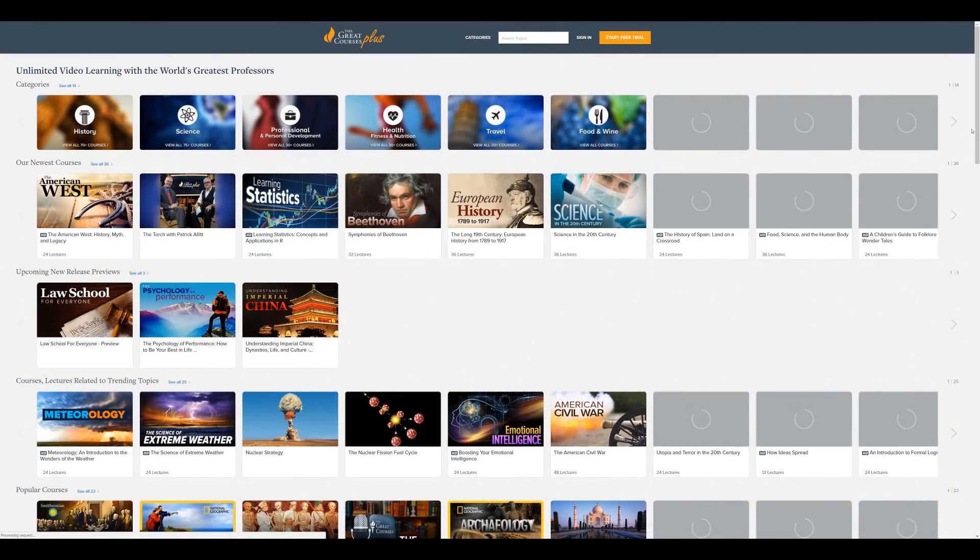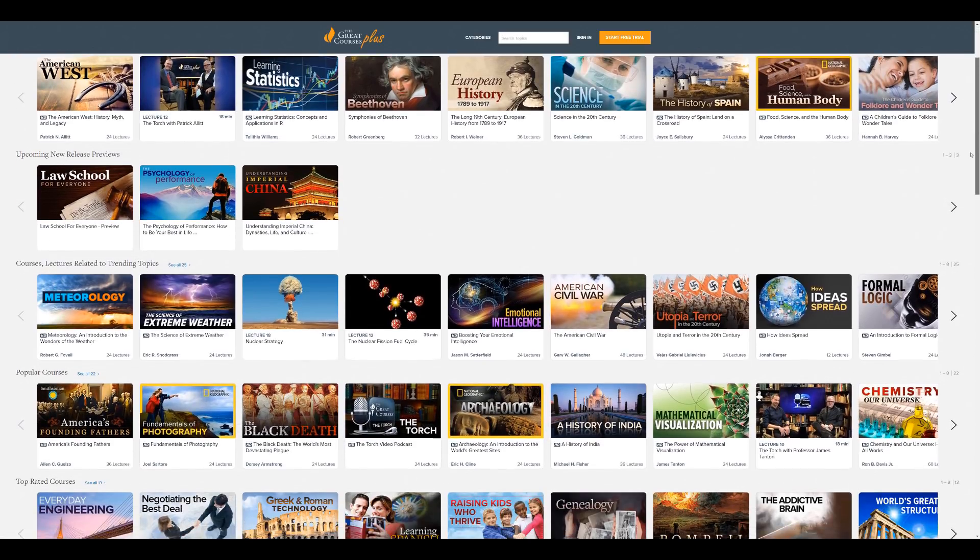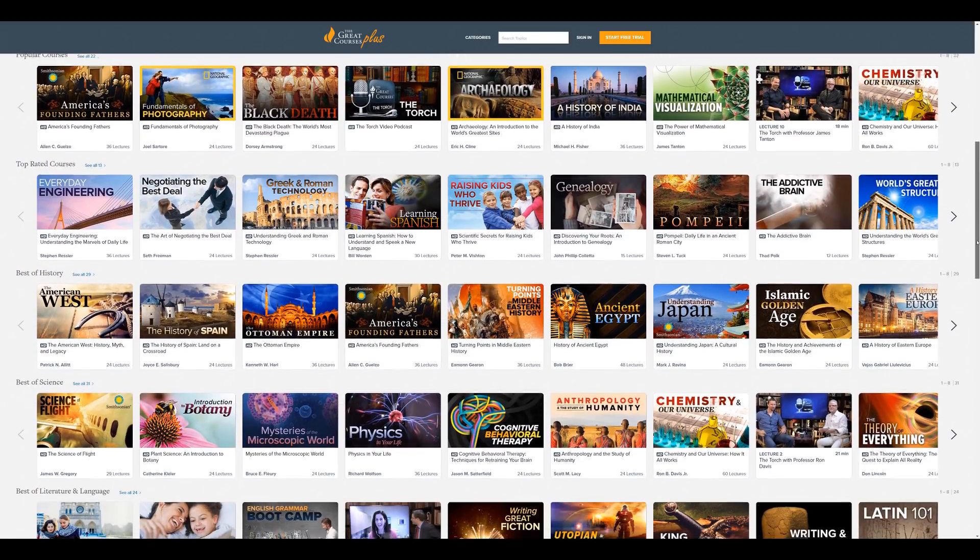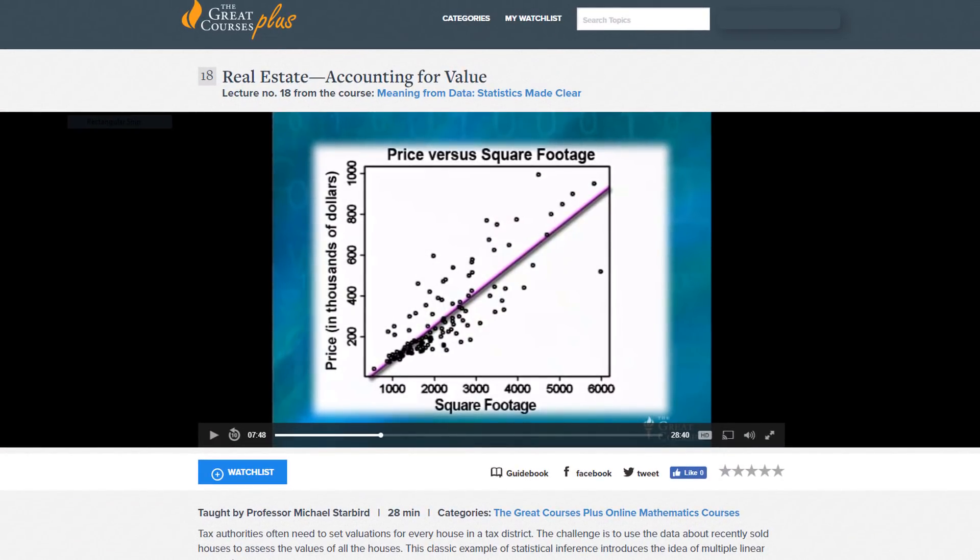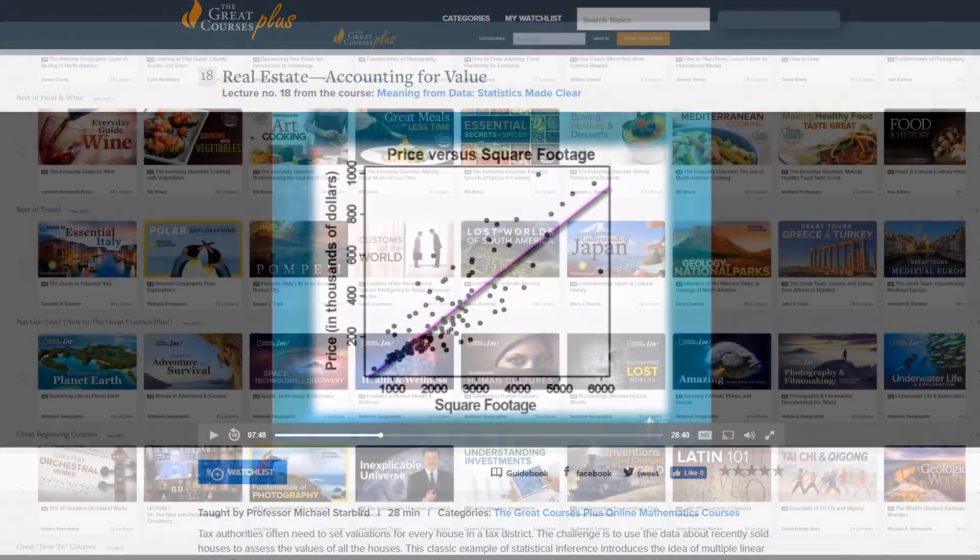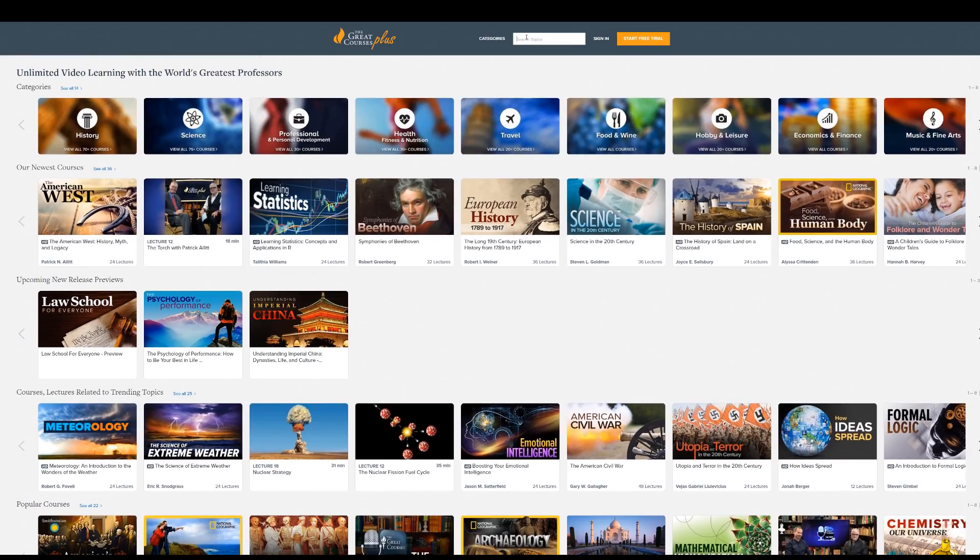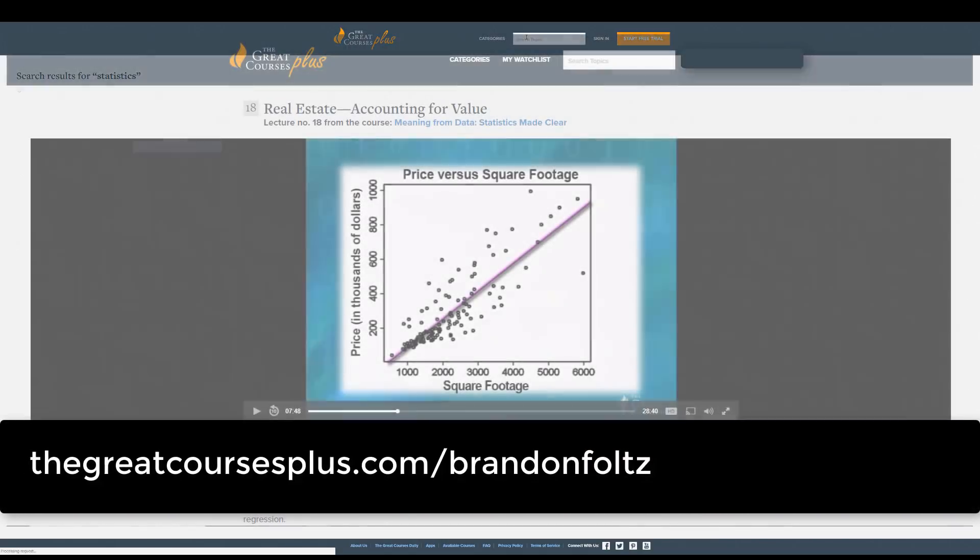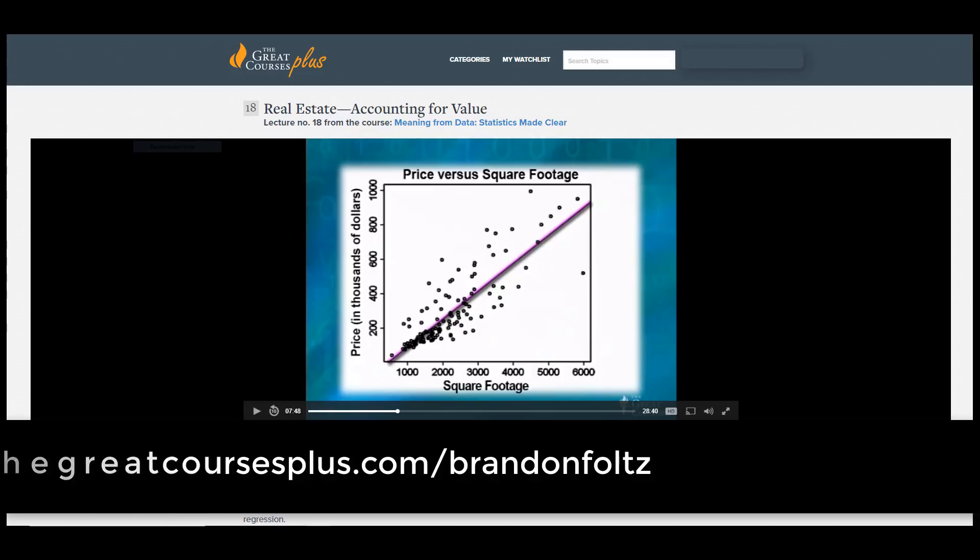This video is brought to you by The Great Courses Plus, where you can get unlimited access to over 10,000 different video lectures taught by award-winning professors from the Ivy League and other top schools around the world. You can learn about anything that interests you—science, literature, and yes, statistics, like this lecture from Professor Michael Starbird called Real Estate, Accounting for Value, from his course Meaning from Data, Statistics Made Clear. And right now, The Great Courses Plus is offering my viewers a free trial and is also now optimized for Australia and the UK. So go to thegreatcoursesplus.com slash Brandon Foltz, my name, to have access to the 10,000 video lecture library or click on the link in the description below.